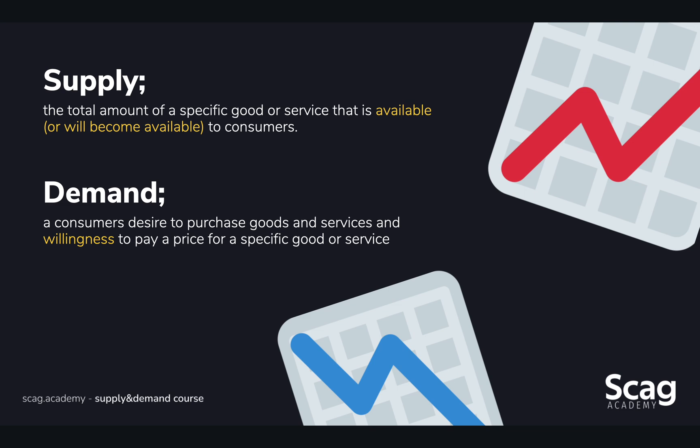Demand is going to be a consumer's desire to purchase goods and services and their willingness to pay a price for a specific good or service. So let's say that store has a hundred cartons of eggs and they typically sell between 90 and a hundred every single week. They sell them for a dollar — equilibrium. The store has enough to meet the demand, and the demand is willing to pay that price.